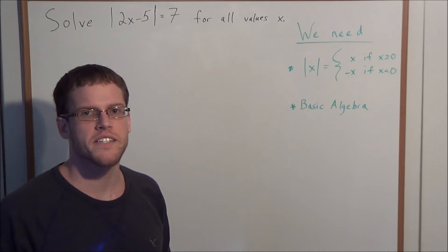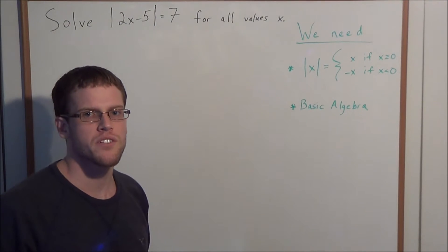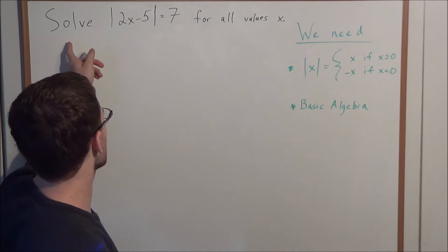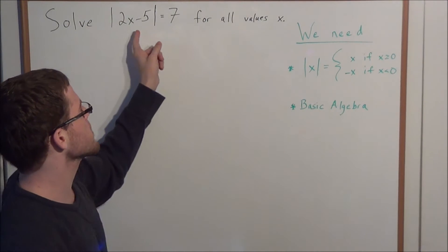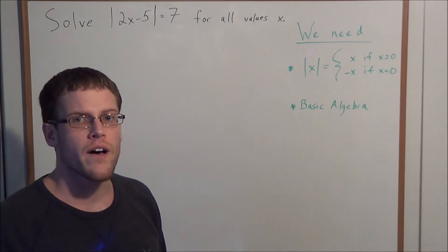Hello, YouTube students. My name is Vincent, and today I want to take a look at absolute value equations. In particular, I want to look at the problem: solve the absolute value of 2x minus 5 equals 7 for all values x.